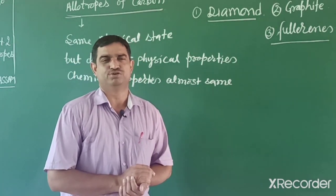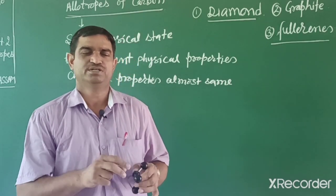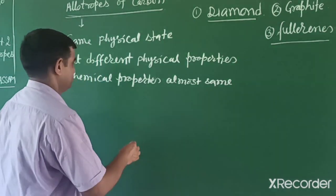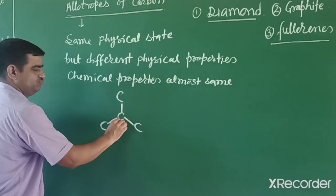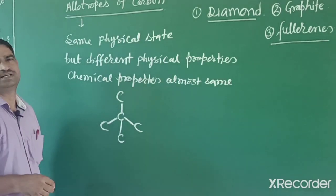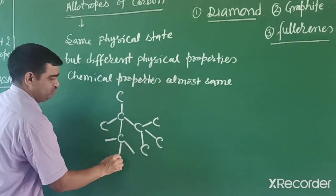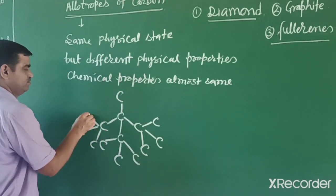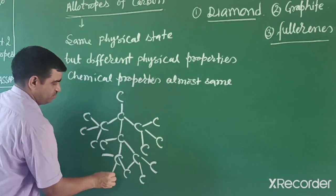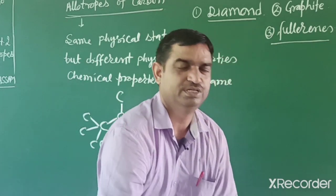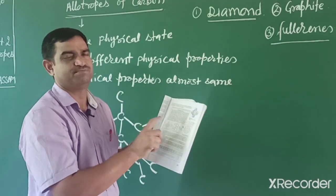Diamond is a three-dimensional network-like solid. Carbon has four valency, so one carbon is attached to four other carbon atoms in a tetrahedral arrangement with single bonds. Each carbon is again attached to four carbons, forming a rigid structure. You can see the structure of diamond, graphite and fullerene in your NCERT book at page number 61.